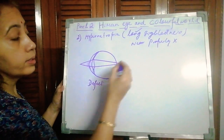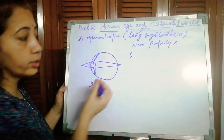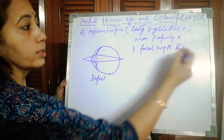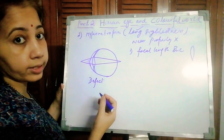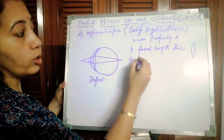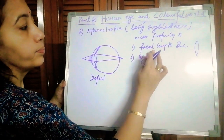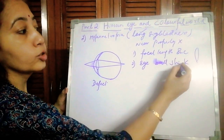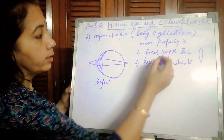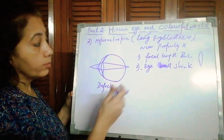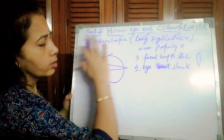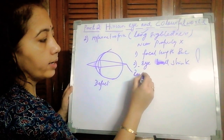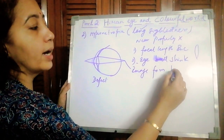Why does this defect happen? There are again two conditions. First, the focal length of the lens increases — the lens becomes stretched out. Second, the eyeball shrinks. This can be genetic or due to weakness of the ciliary muscles. As a result, the image is formed behind the retina.